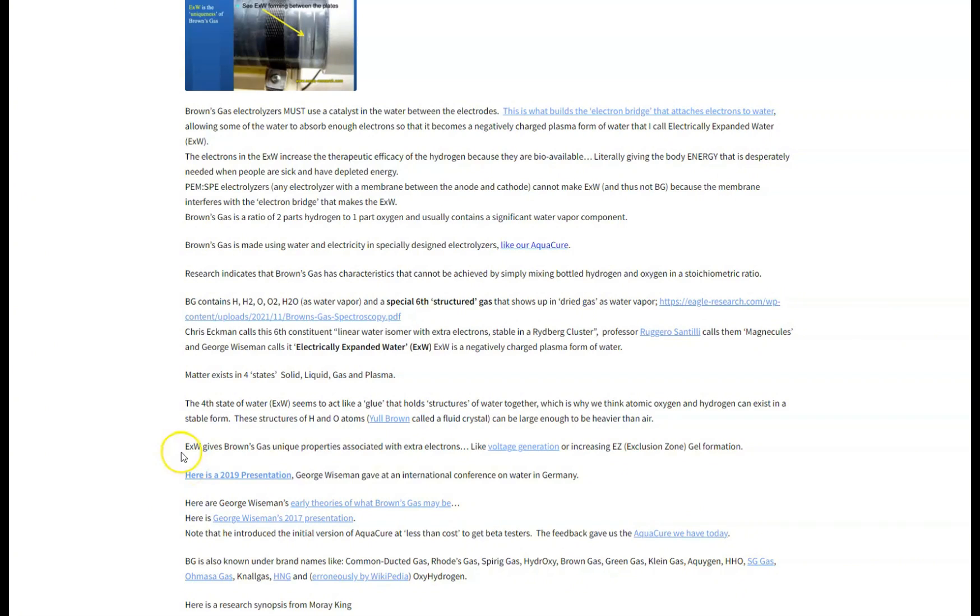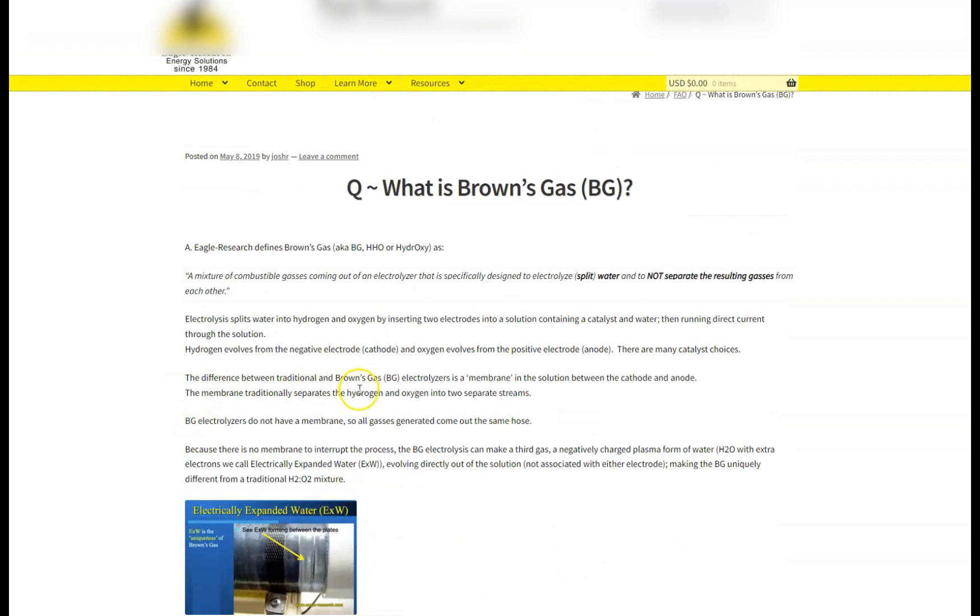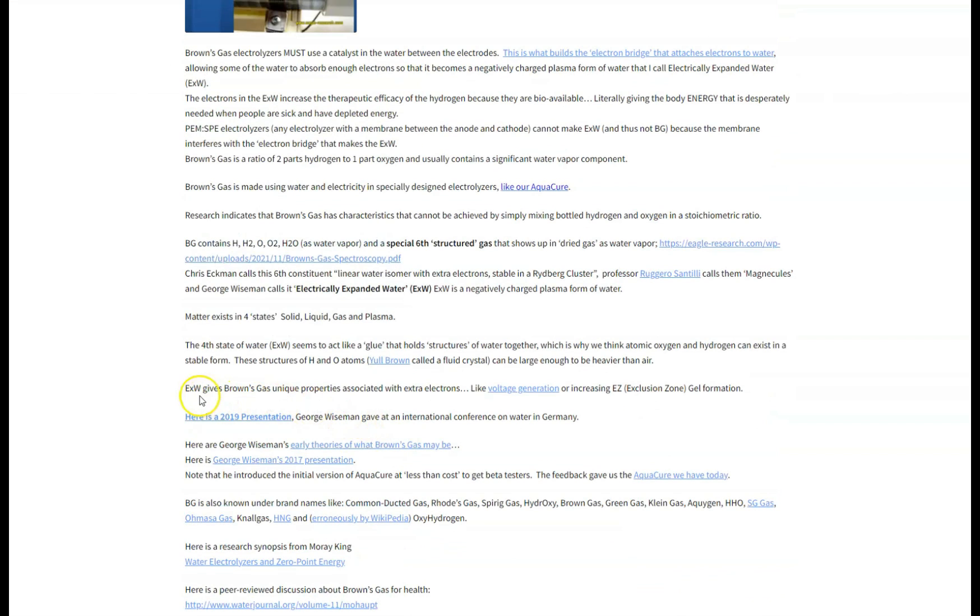As you can see from the video, this statement is saying that electrically expanded water gives Brown's gas unique properties associated with extra electrons, and you can see how the electrons were being collected and they could be measured on the voltmeter. So if this is true from what this page is saying that you can only make electrically expanded water with an electrolyzer without a membrane, you shouldn't be able to generate any voltage on the voltmeter with a PEM style Brown's gas generator. And that's what we're going to do today. We're going to recreate this experiment that was done, I think it was probably done about 12 or 13 years ago, and we're going to see what happens. Let's see if the PEM electrolyzer can collect electrons like the alkaline electrolyzer can.